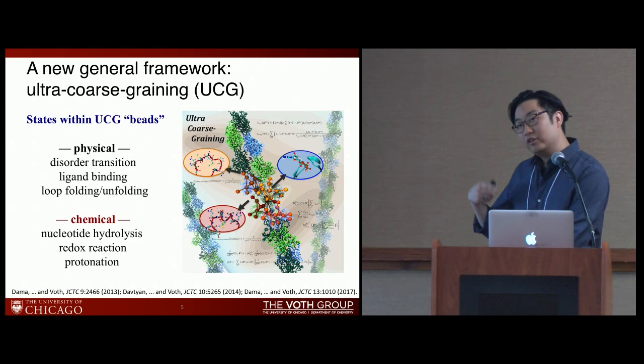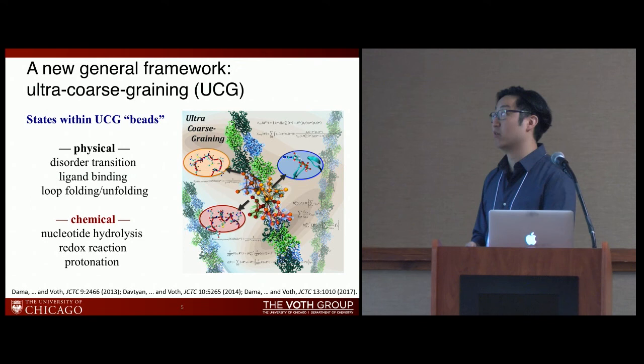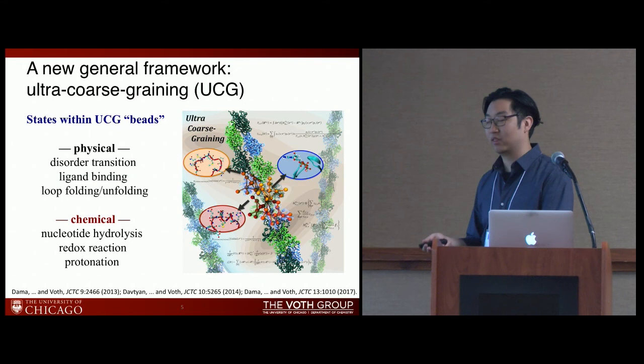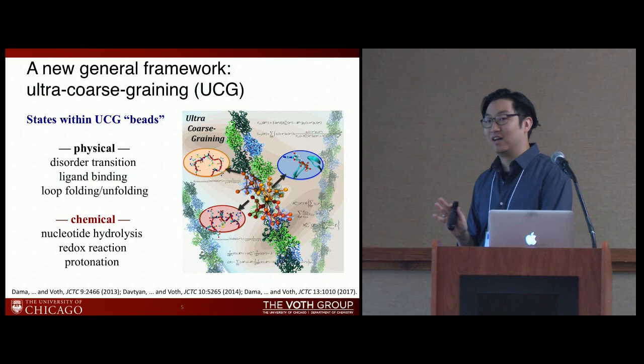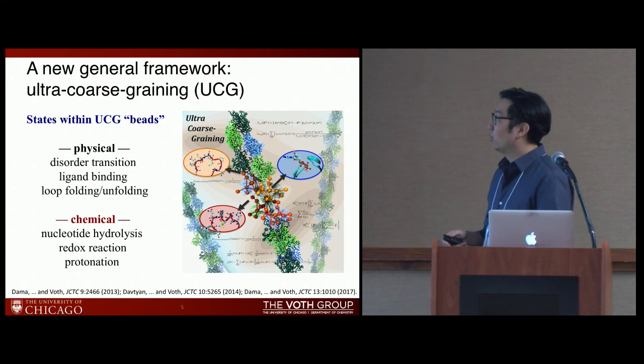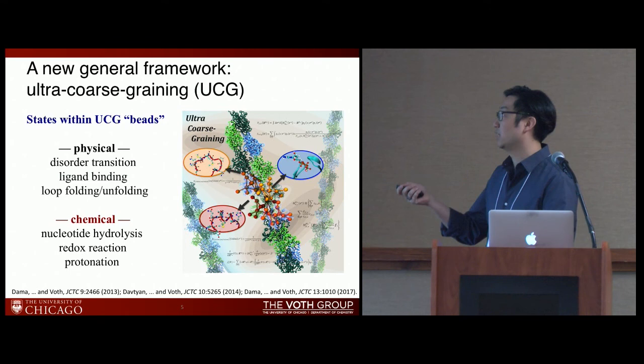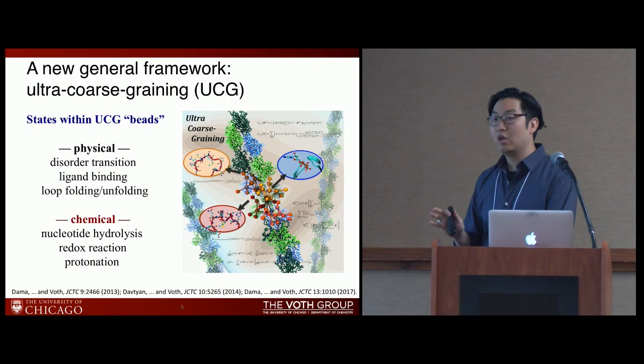We also promote a framework called ultra-coarse-graining. When we represent a protein with very few sites — say 10 to 20 atoms representing many residues — simple classical two-body interactions can't represent anything meaningful. So we increase the expressivity of our coarse-grained models using internal states. These internal states can describe structural transitions within degrees of freedom, chemical transitions such as ATP or ADP bound moieties, or protonation changes. We develop systematic ways of handling this state switching.